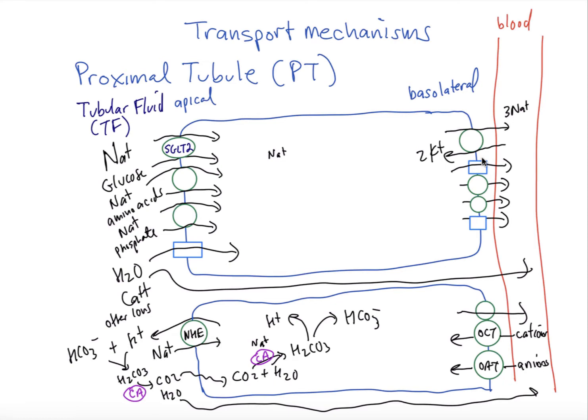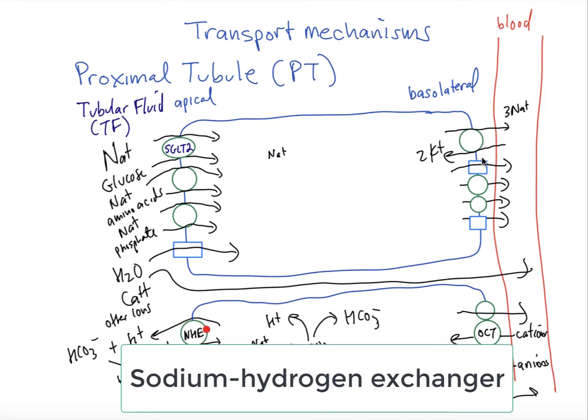We have another proximal tubule cell and you see that there's some junctions in between here that we can have more water and calcium and other ions go through. That's characteristic of the proximal tubule and we can see here that we have room now to put in some other mechanisms of reabsorbing bicarbonate. Now we filter bicarbonate at the glomerulus and it turns out that we need to reabsorb quite a bit of this bicarbonate and a lot of it is done here through this mechanism that's shown using this sodium hydrogen exchanger.